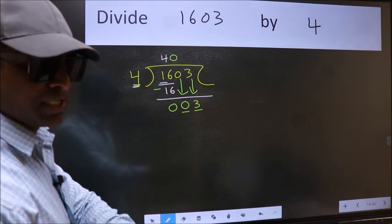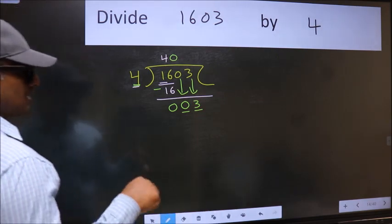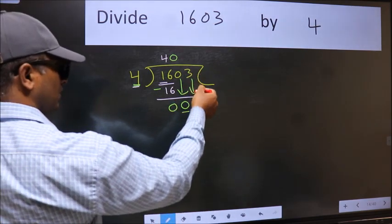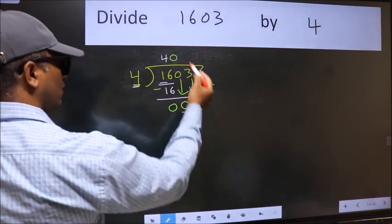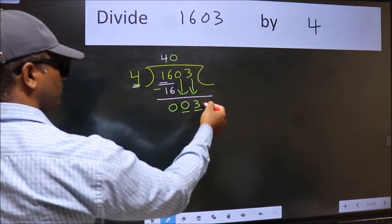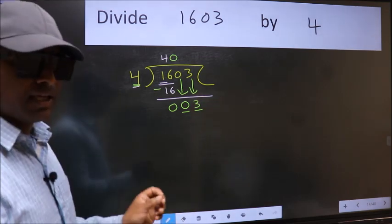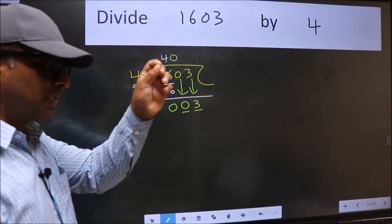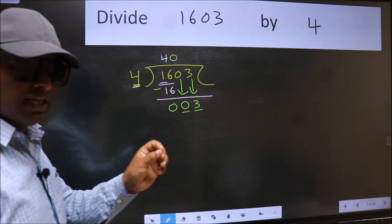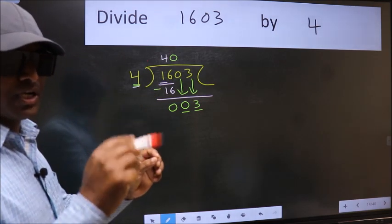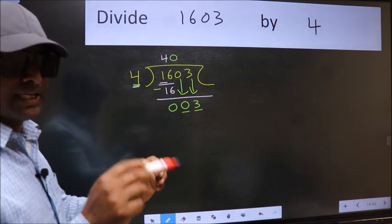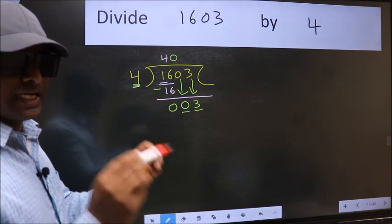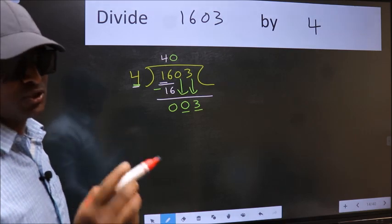Why is it wrong? Because just now you brought this number down. And in the same step, you want to put dot, take 0, which is wrong. I repeat, bring the number down and also put dot, take 0. Both at the same step, you should not do.